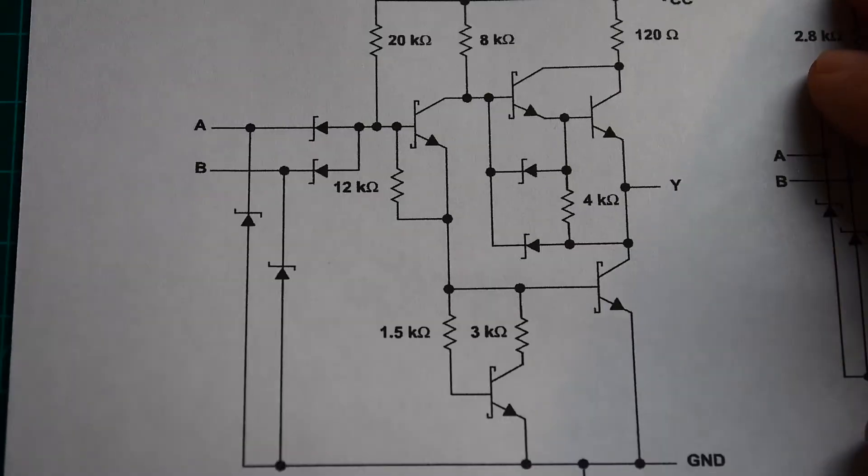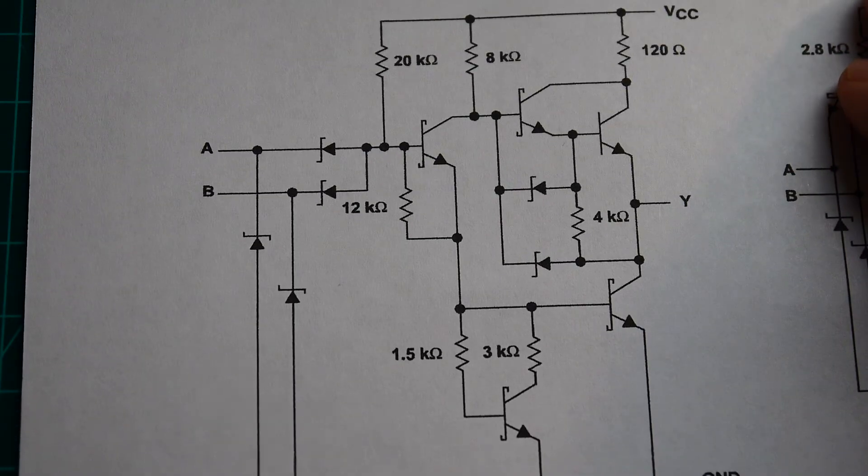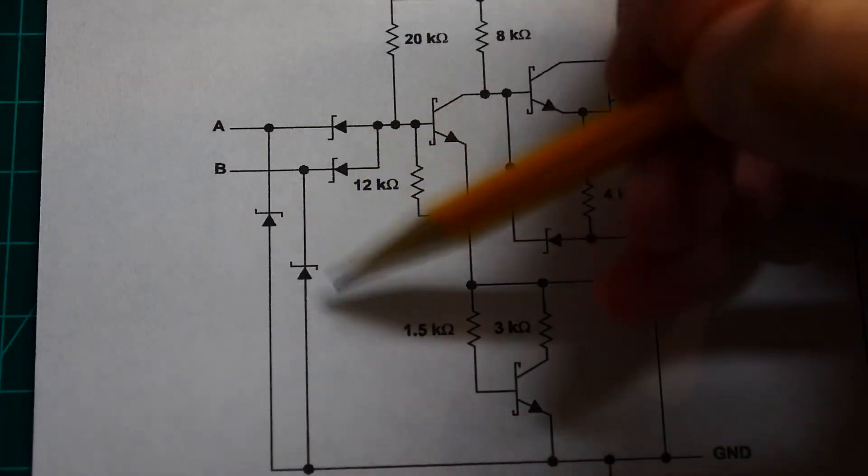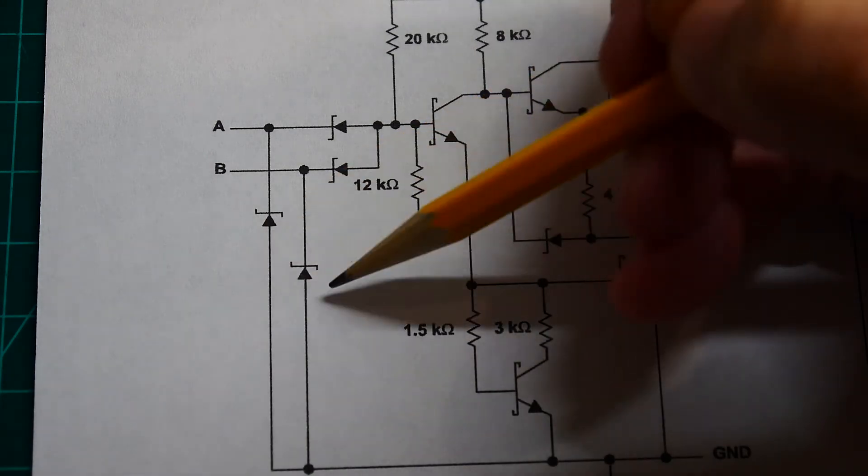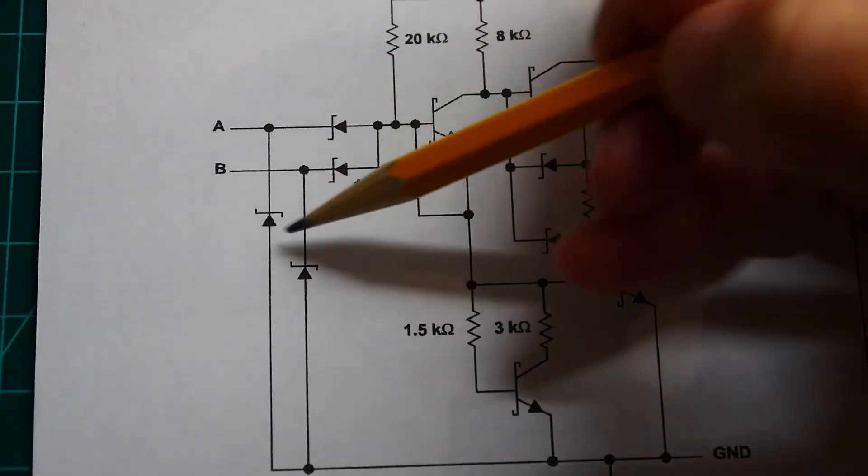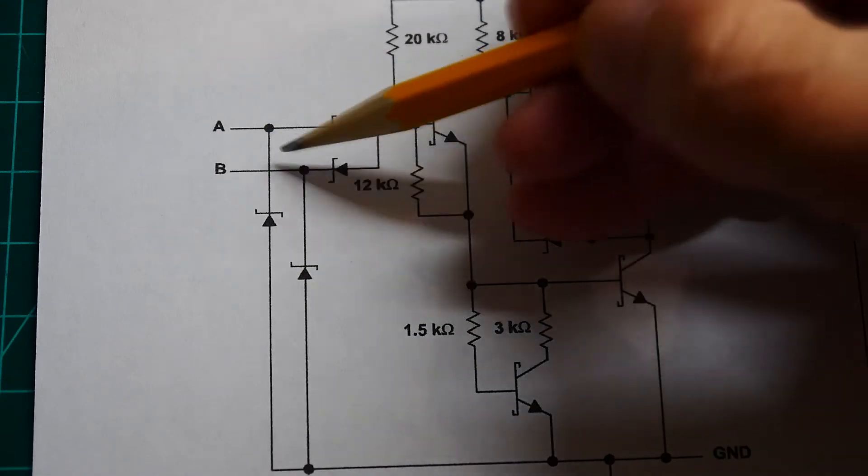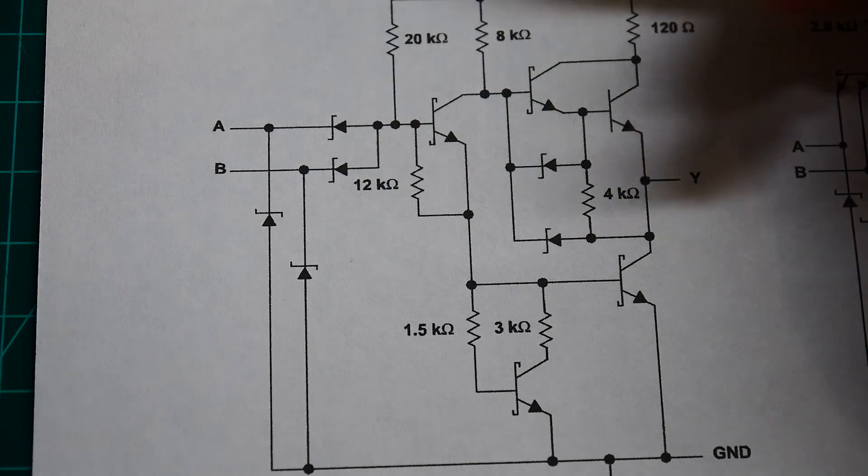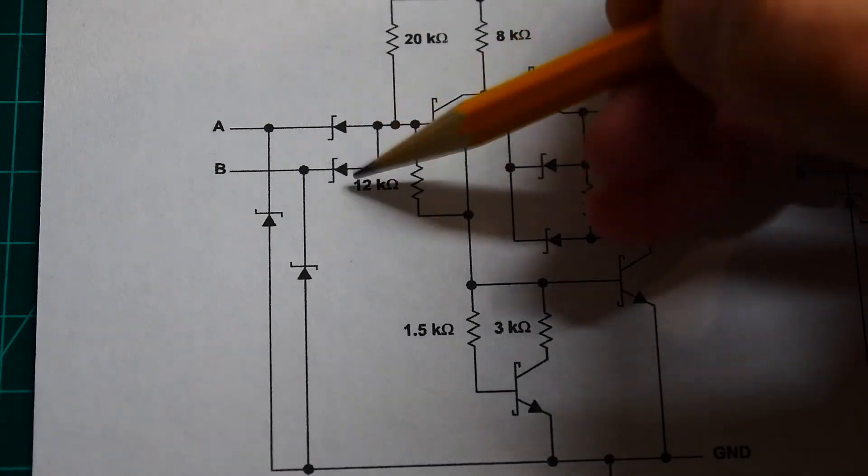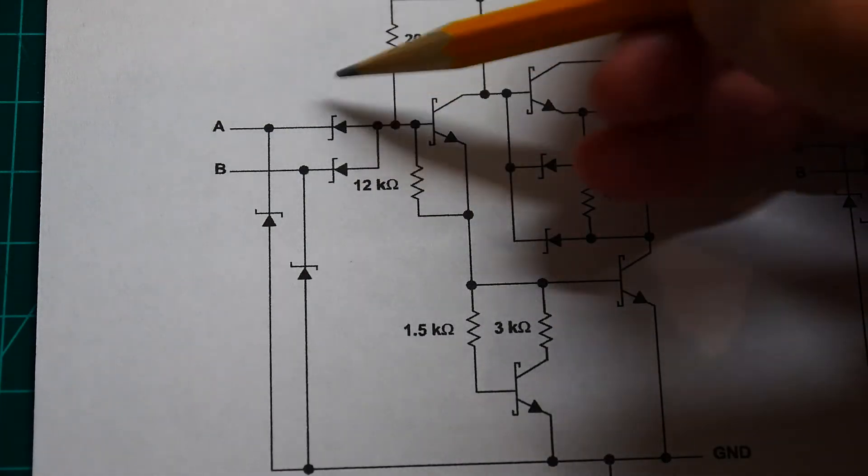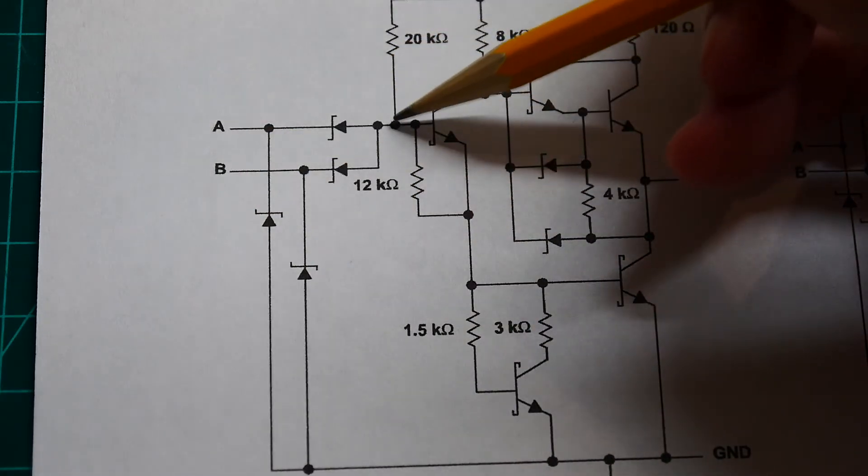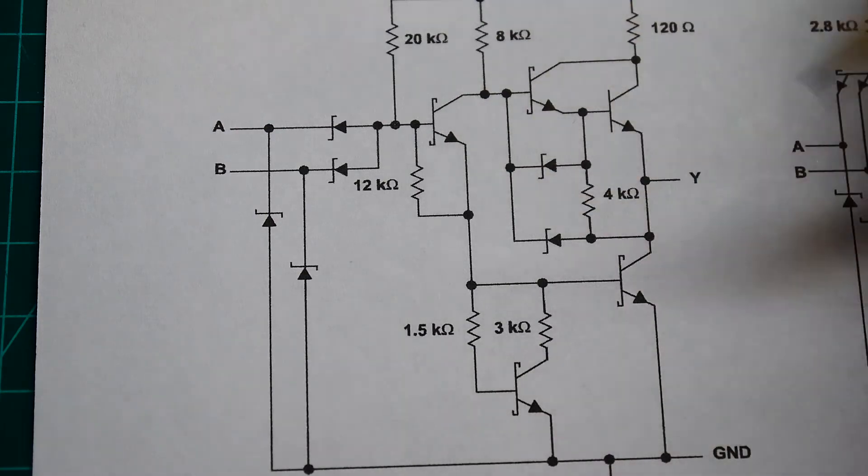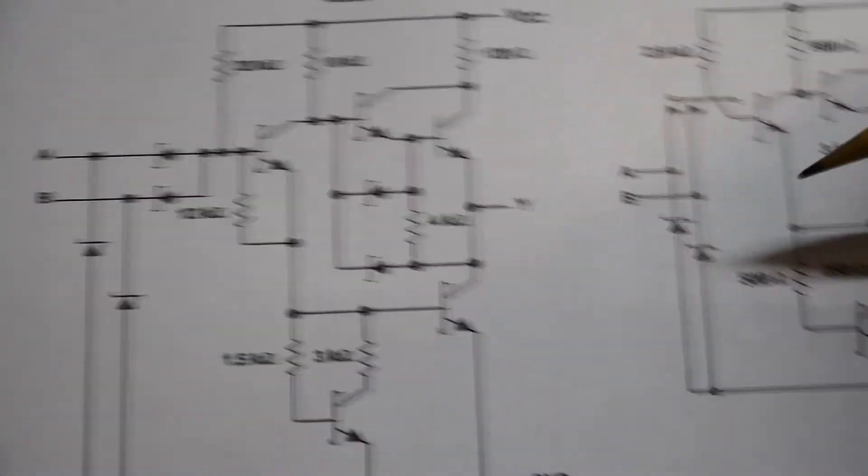So let's take a look at the LS version. The LS version is a bit odd. We look at the input. We have some fancier Schottky diodes now. So we have some fancier diodes. We have some diode switching here. So instead of using a double emitter transistor, we're just going to use a diode OR gate. So either A can be low or B can be low to create this node to be low, which will turn off this transistor.